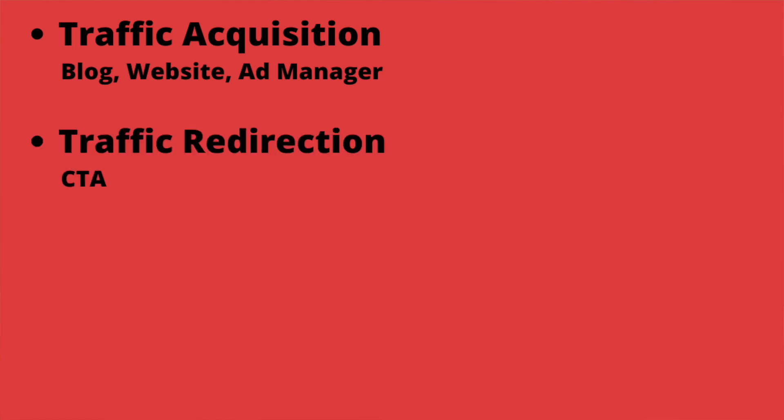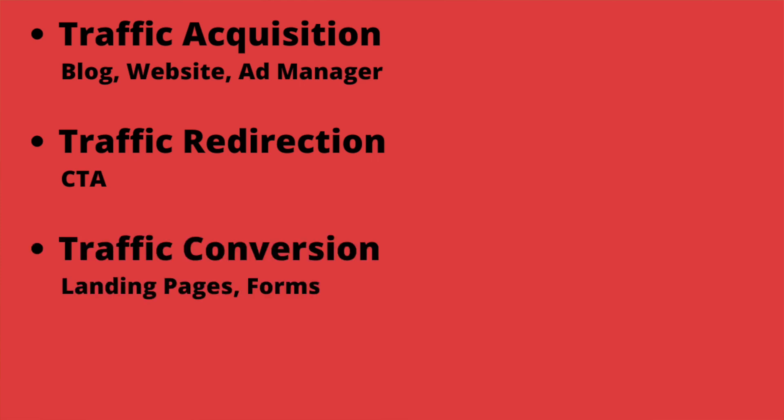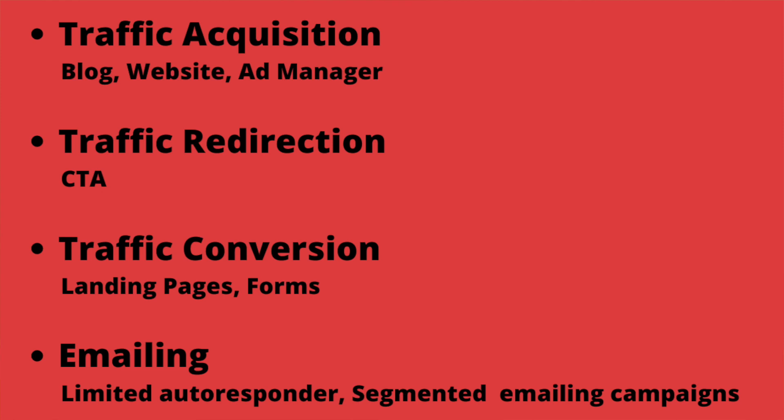Now that you get traffic on your website, you will need to redirect it. For that, HubSpot gives you a tool called CTA — Calls to Action — which are pop-ups that aim to get the attention of your visitor and redirect them to a conversion page. In terms of conversion, you will have the possibility to create and manage landing pages and conversion forms. At the end, you will be able to have a limited autoresponder following the submission of a form through one email, and the ability to send segmented manual emailing campaigns. So basically, that's the only thing you can do in HubSpot Starter plan.